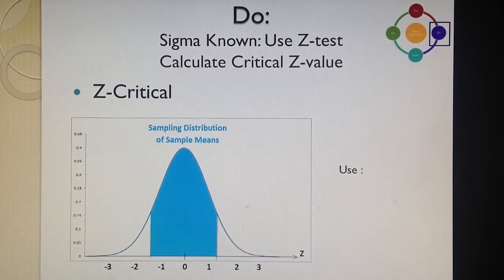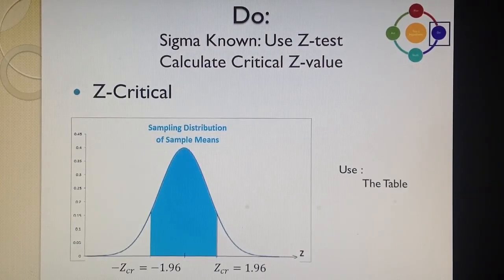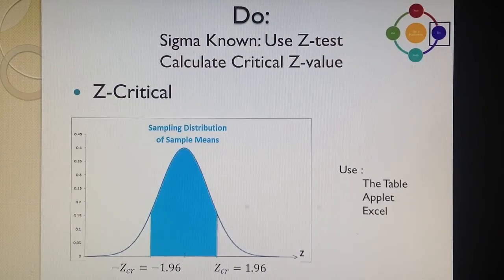If we know sigma, how to calculate Z? Well, critical Z value—I can use the table, Excel, or Applet to calculate the Z value that divides the area of acceptance of null hypothesis, the blue area, from the area of rejection. At 5% level of significance, Z critical is 1.96 and negative 1.96 to the left.